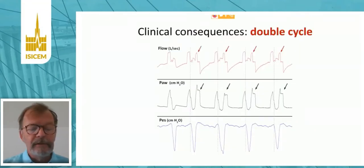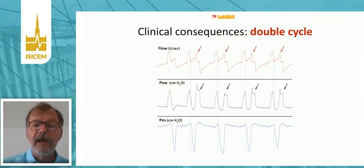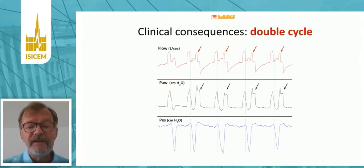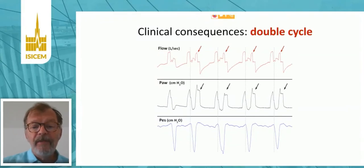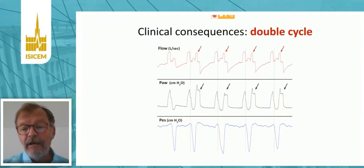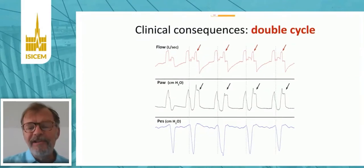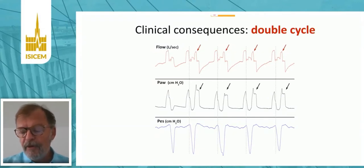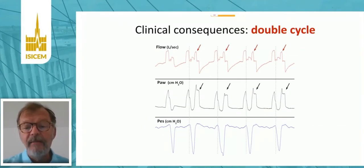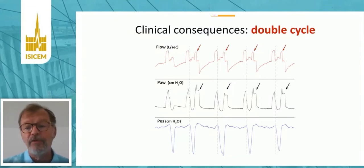This was a very interesting finding because it could have important consequences. For instance, this is an example where this reverse triggering phenomenon, occurring almost at every mechanical insufflation, was responsible for triggering a second breath. So we called it double cycling. It's not like double triggering because the patient is not triggering the first breath, but you see that every time there is this contraction, it triggers a second breath. Of course, the patient was receiving twice the amount of ventilation which was set.